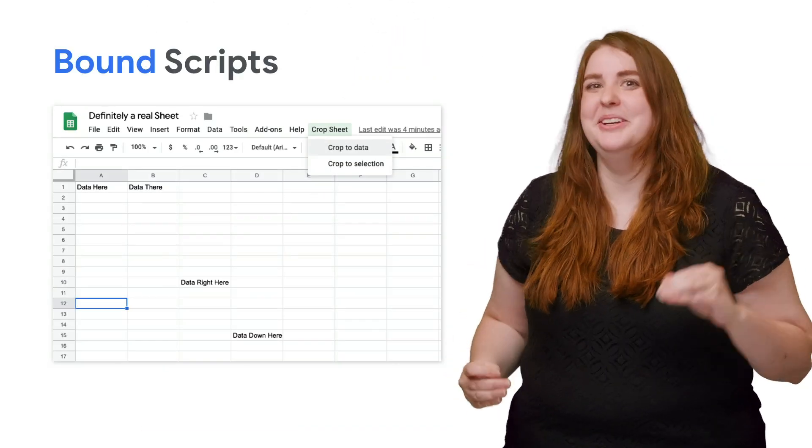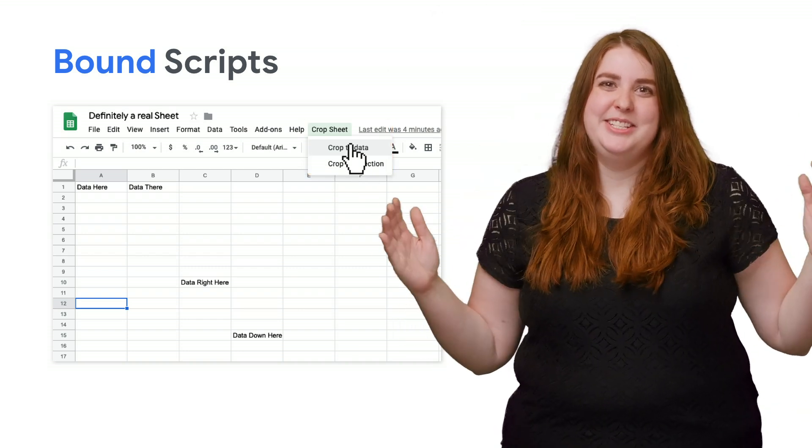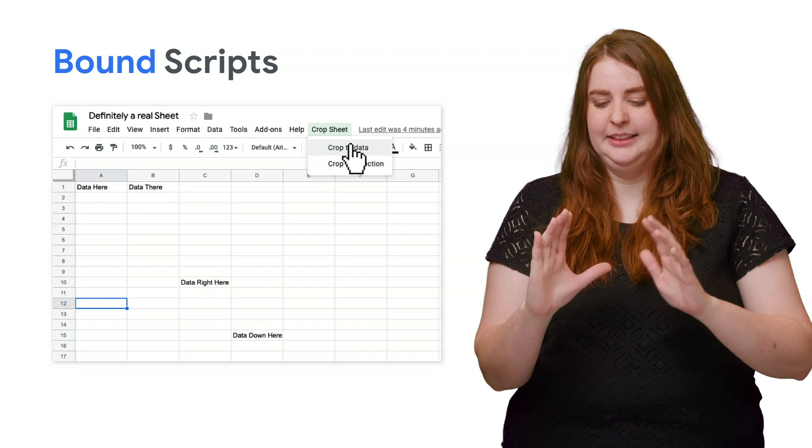Bound scripts are great at processing or formatting data in real time. For example, my favorite bound script is a custom menu option that when you click it, it crops the spreadsheet to the cells that have been filled in because I cannot stand accidentally scrolling to a thousand.